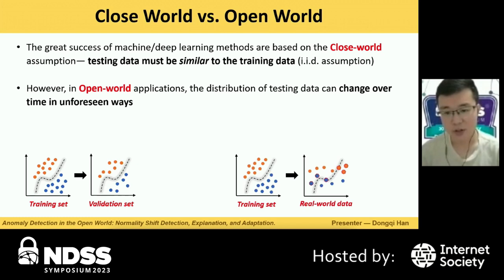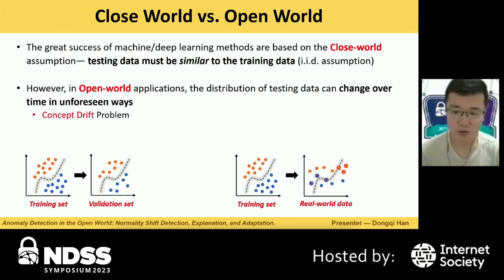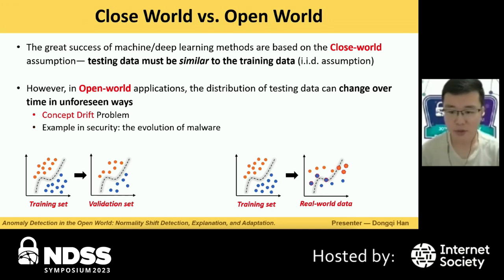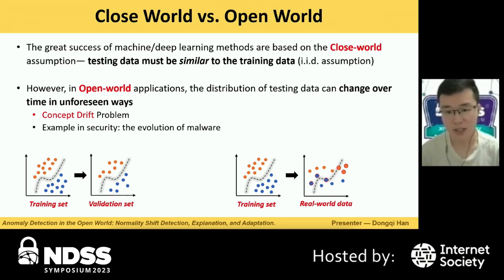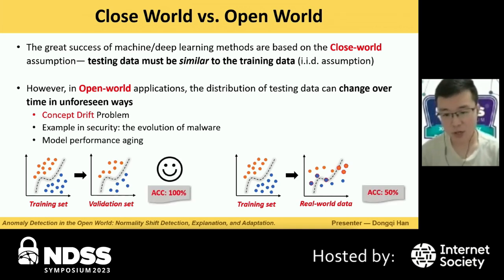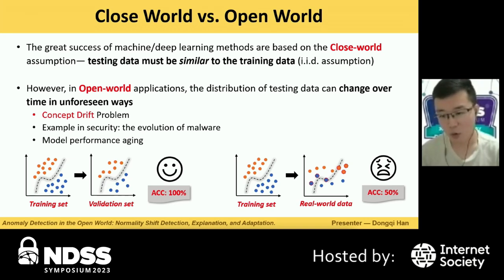However, in open world applications, the distribution of testing data can change over time in unforeseen ways. In the machine learning community, this phenomenon is called the concept drift problem. This is quite common in the security domain. For example, the evolution of malware will cause statistical features to keep changing, leading to performance aging of malware classifiers. Frankly, model aging is one of the most frustrating problems in real-world applications, leading to overwhelming false positives and false negatives in real deployment.